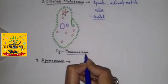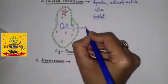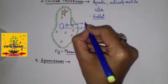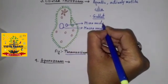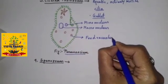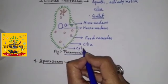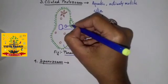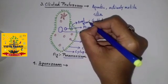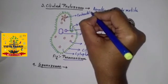Example of the ciliated protozoans is Paramecium. Now if we consider a diagram of Paramecium, so this is their macronucleus. This is micronucleus, food vacuoles, cilia, cytoplasm. This structure is known as oral groove and this is their contractile vacuole.